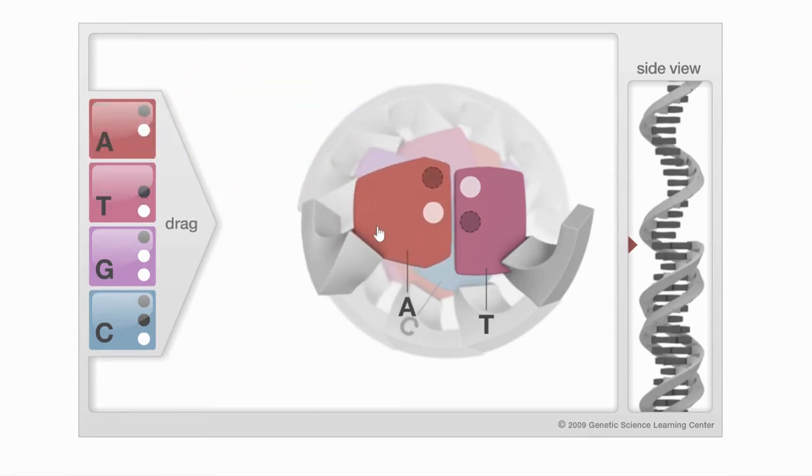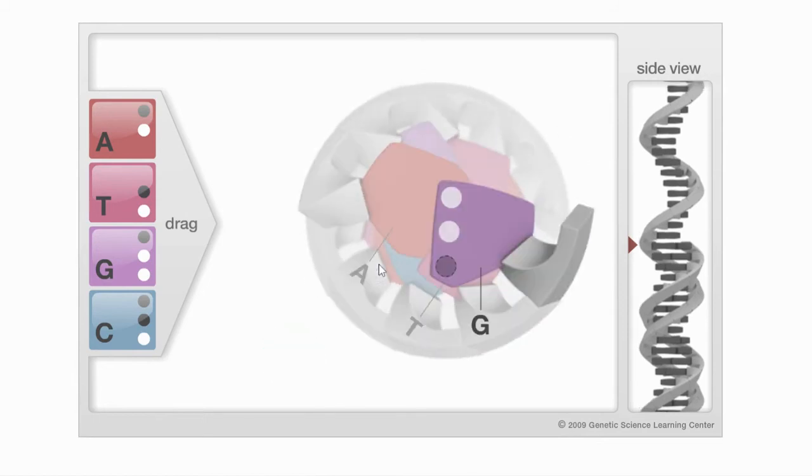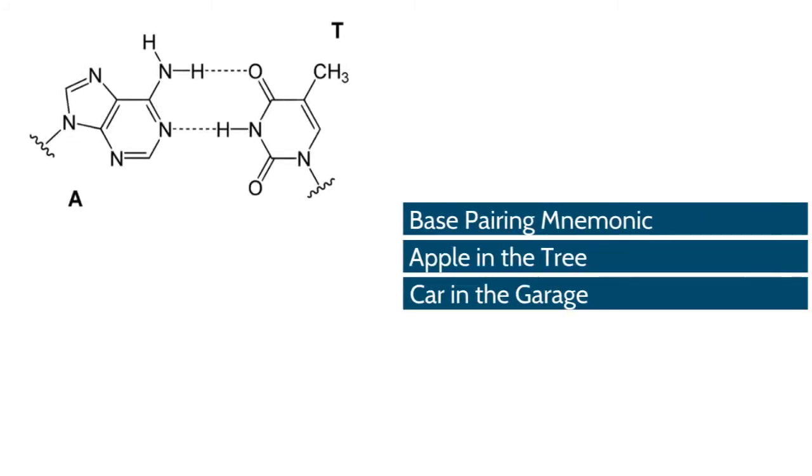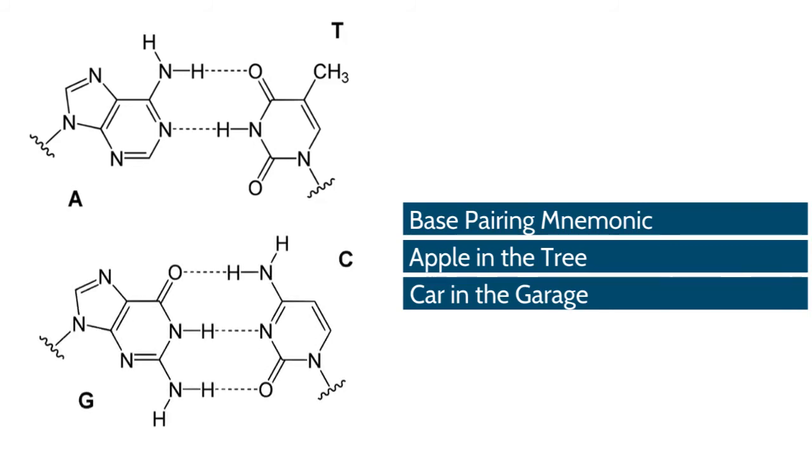To remember the base pairing rules for DNA, there is a simple mnemonic device you can use. Apple in the tree will help you remember that adenine goes with thymine. Car in the garage will help you to remember that cytosine goes with guanine. Let's say that one more time. Apple in the tree, A goes with T. Car in the garage, C goes with G.